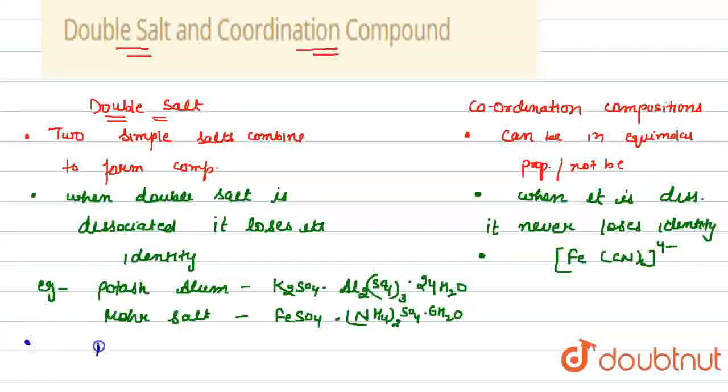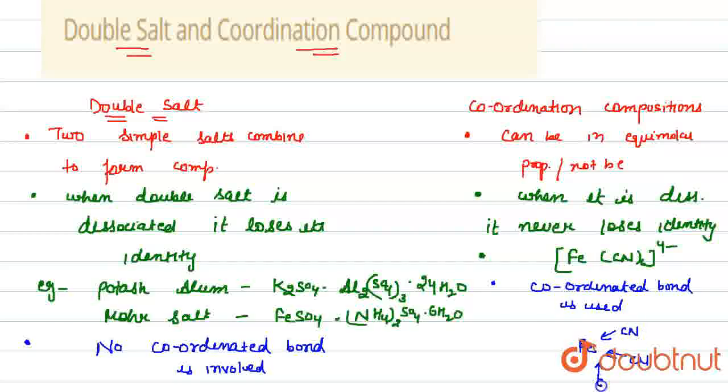And one more thing to discuss in this compound is in double salt, no coordinated bond is involved, because like if we take example of this iron, with this iron, all the cyanide ligands donate their electron pair towards the iron, such that a completely filled sub shells of iron is formed.